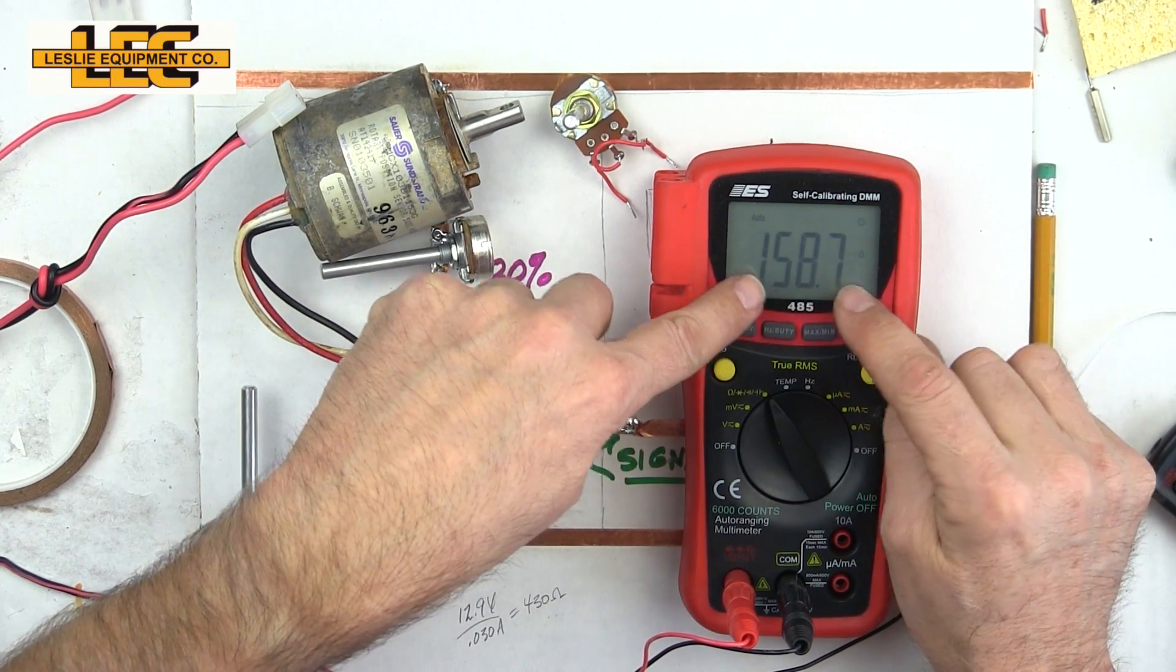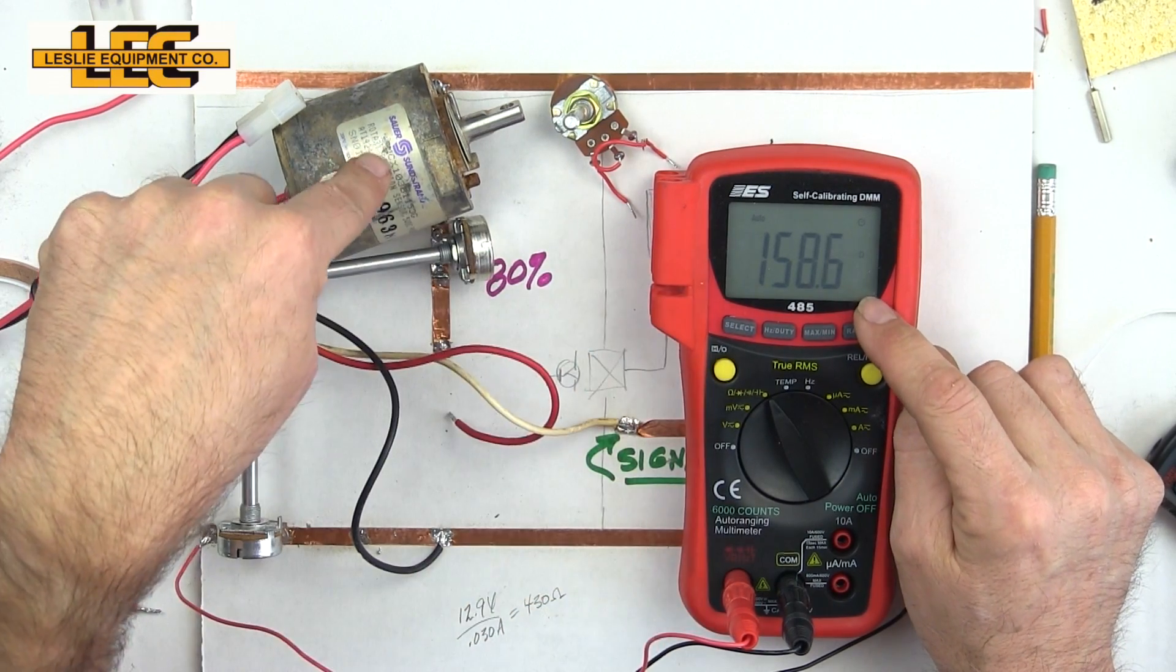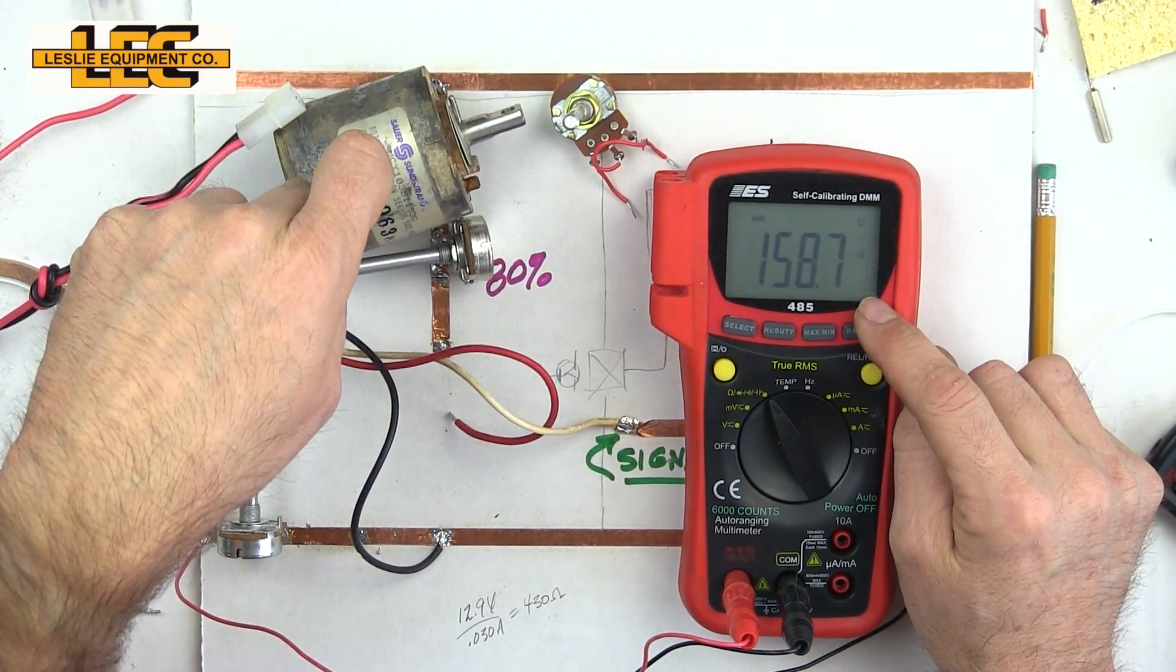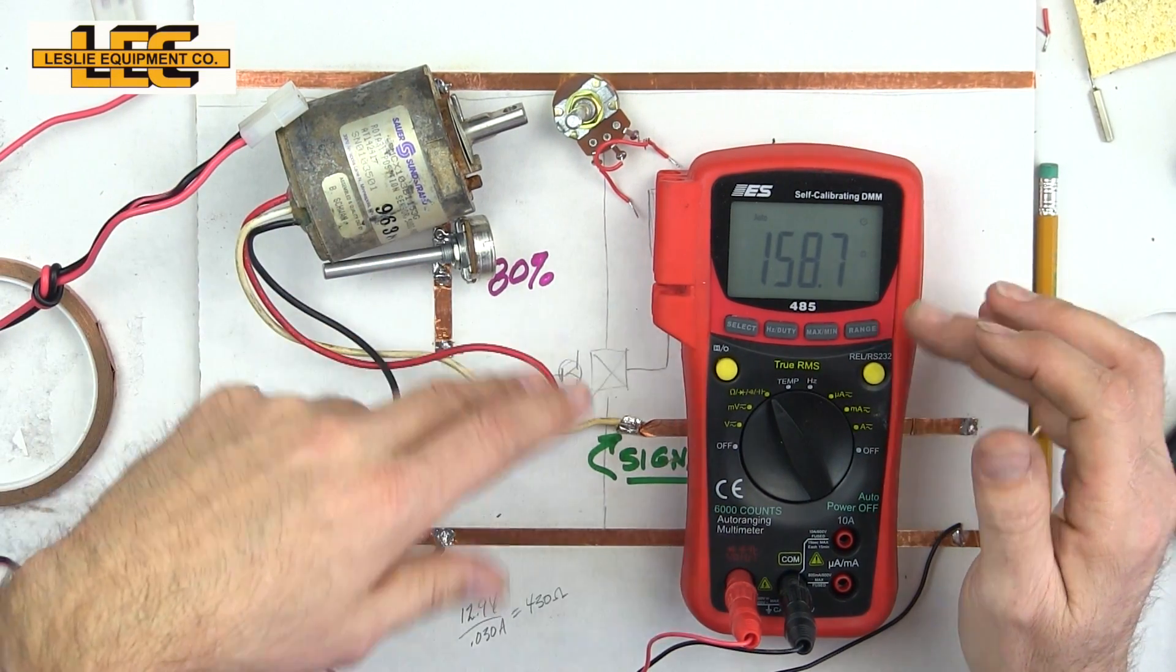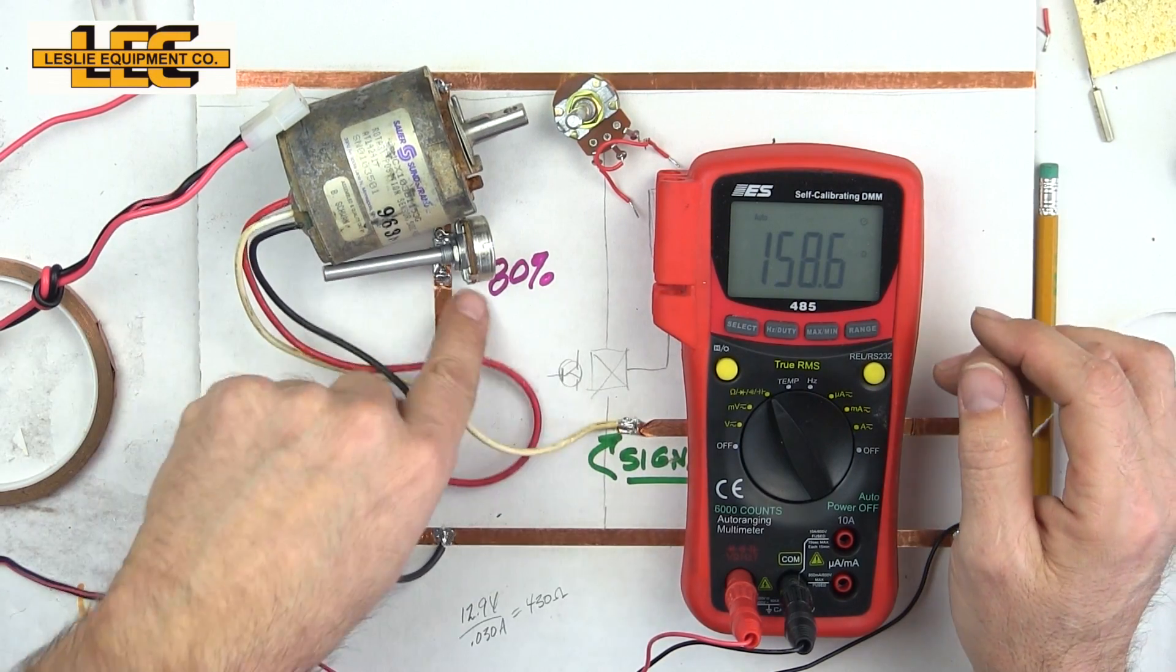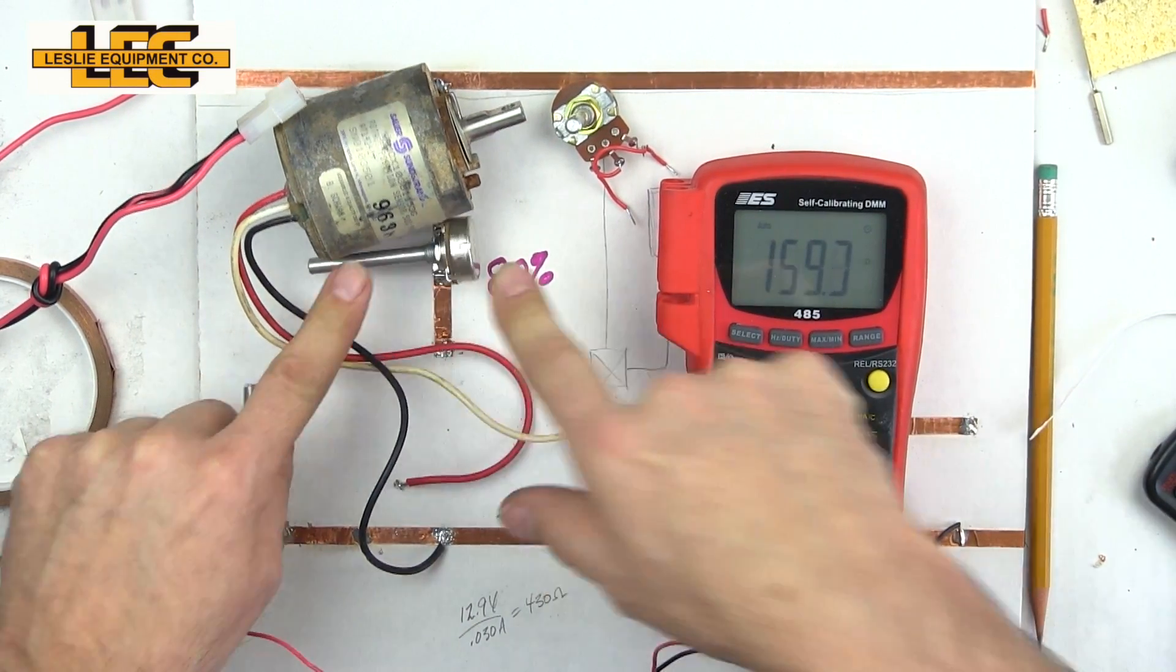That's still a normal reading. So what's going to happen here is this thing's either going to fail altogether, which is very unlikely, or something in the circuitry is going to fail, which is incredibly likely, 80 percent.